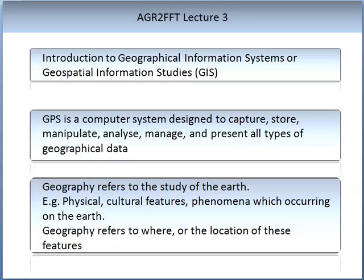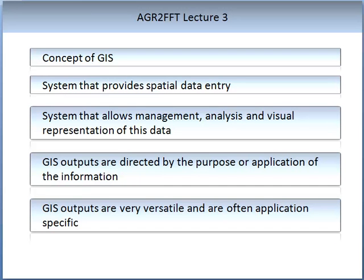So what do we mean by geographical information? Geography refers to the study of the Earth — that is, any physical, cultural feature or phenomena occurring on the Earth, and refers to where or the location of these features. Conceptually, GIS is a system that provides spatial data entry, allowing management, analysis, and visual representation of that data.